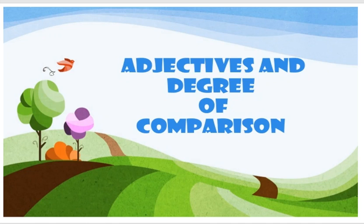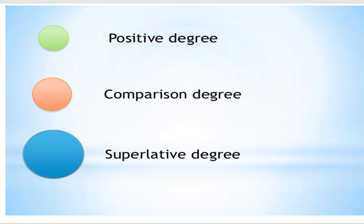Good day everyone. How are you? I think and I hope that everything is okay. Today I'm here to explain you the rule degrees of adjectives. There are three degrees of adjectives, and they are positive degree, comparative degree and superlative degree.